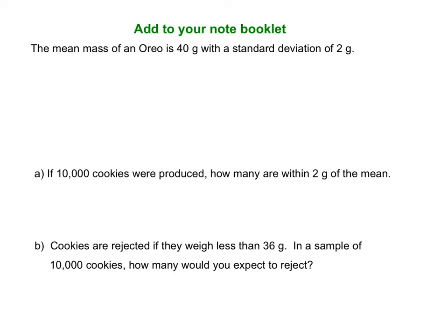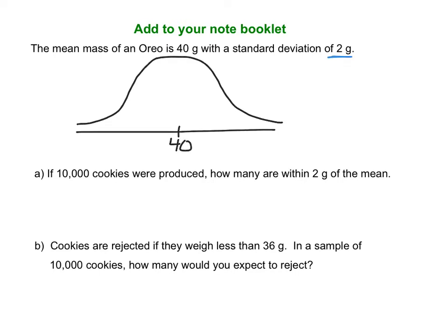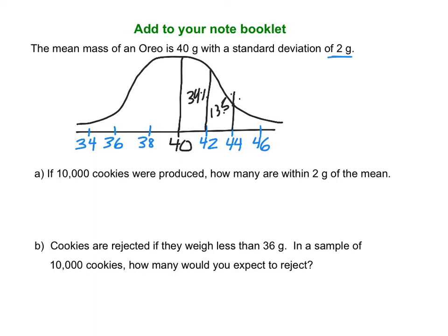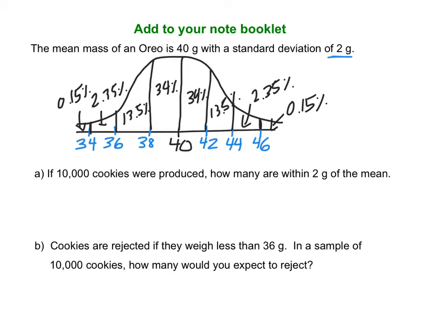The first step of any of these problems is to draw your curve. Make your curve and remember when you make your curve you always put the mean in the middle. The mean is 40 and our standard deviation is 2. So we add 2 to 40 to get 42, then 44, then 46. For the left side, 40 minus 2 is 38, then 36, then 34. Now put the percentages in: the first section is 34%, then 13.5%, then 2.35%, and the last section is 0.15%. Mirror those to the other side.